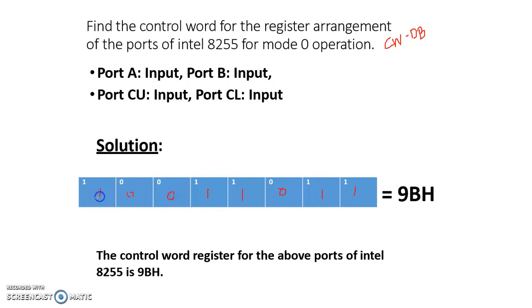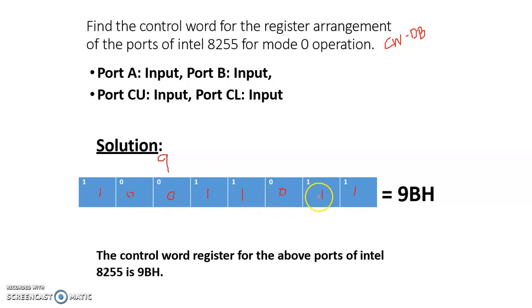So the control word is: 8 plus 1 is 9, 8 plus 2 is 10, plus 1 is 11 — and 11 is B in hexadecimal. So 9B is the control word.